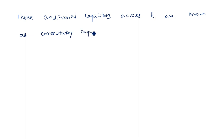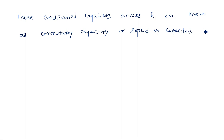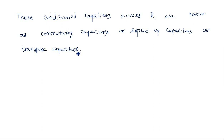These capacitors are known as commutating capacitors, or speed-up capacitors — because their main purpose is to speed up the process and avoid the transient response. They can also be called transpose capacitors. So the three names are: commutating capacitors, speed-up capacitors, and transpose capacitors.